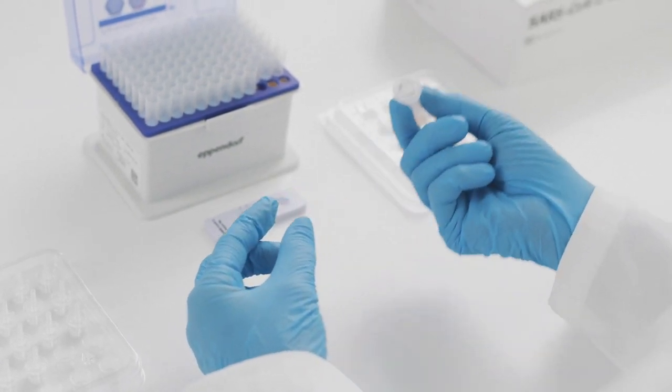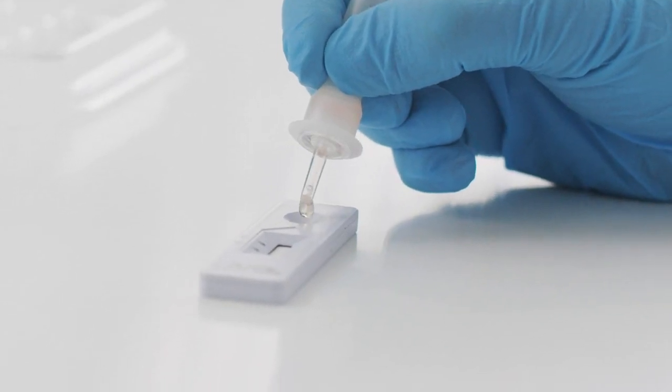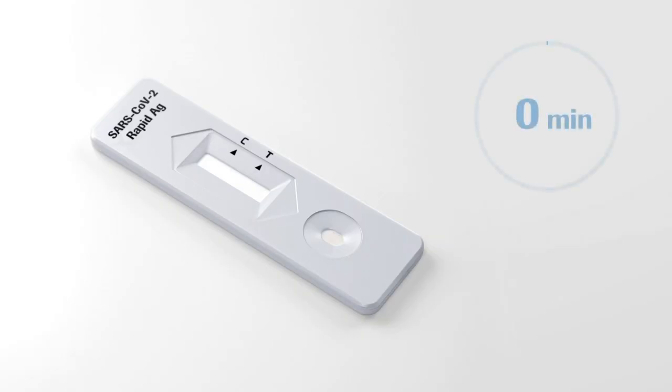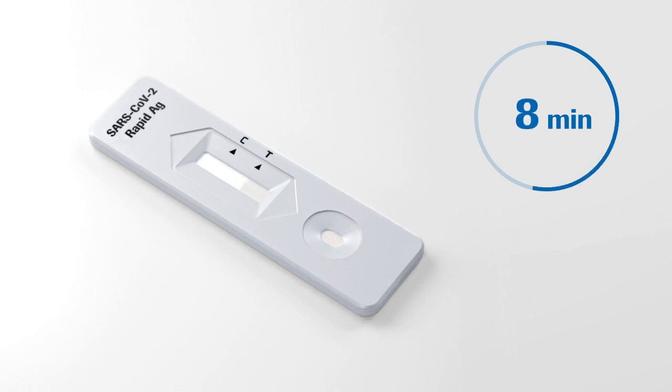Turn the tube and apply three drops of the extracted sample to the specimen well of the test device. You can now wait for the test results. For accurate results, allow 15 minutes to read the test. Do not read the test result after 30 minutes to avoid the risk of incorrect results.